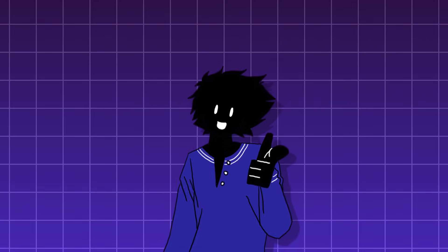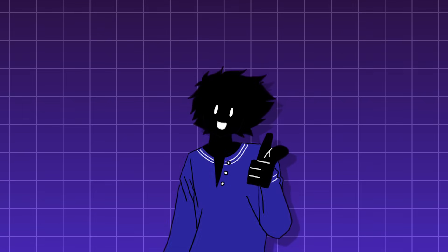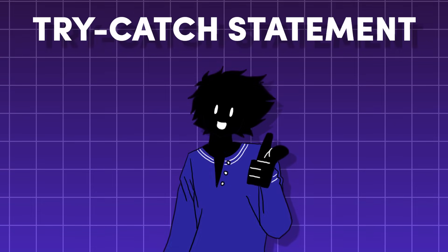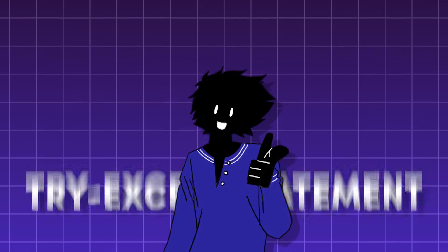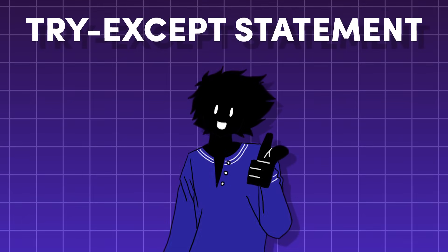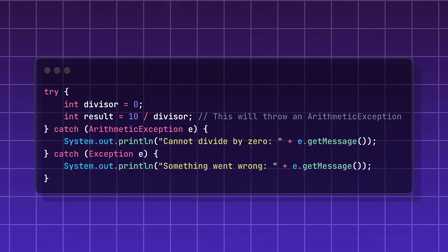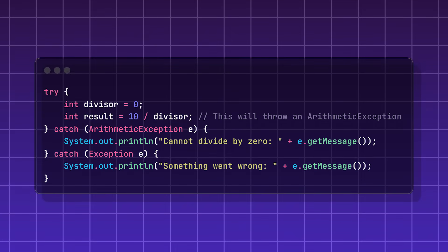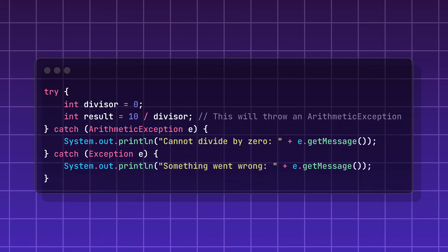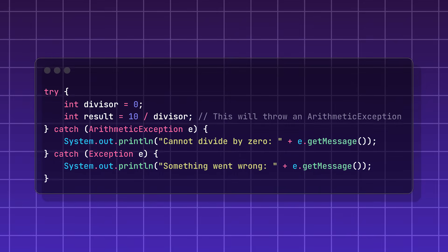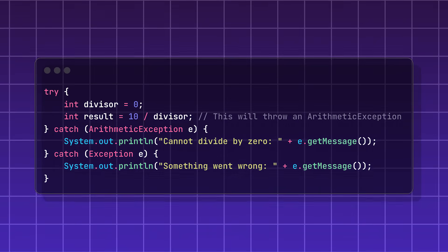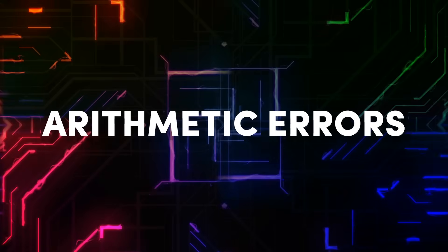You can mitigate runtime errors by using a try-catch statement, or a try-except statement in Python. This is when you try a potentially risky piece of code, and if an error occurs, you can catch it and deal with it appropriately.